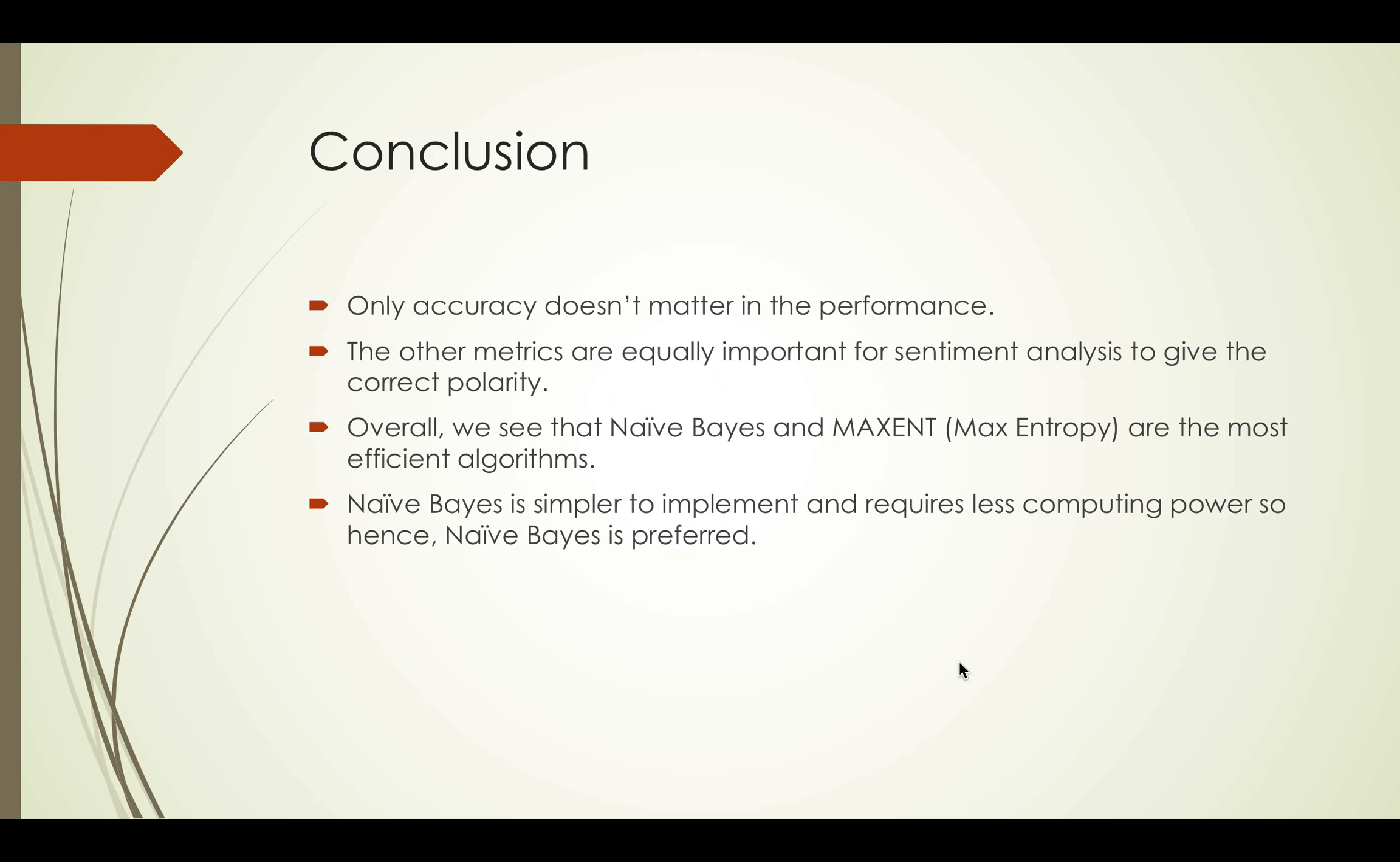In conclusion, only accuracy doesn't matter while measuring performance. Other matrices are equally important. Overall, we see that naive Bayes and max entropy are the most efficient algorithm. However, since naive Bayes is simpler to implement and requires less computing power, it is preferred.